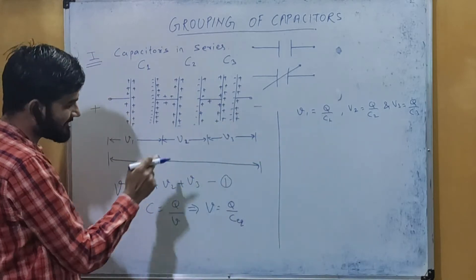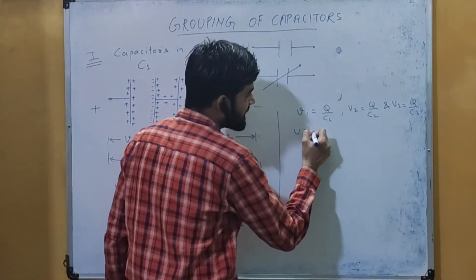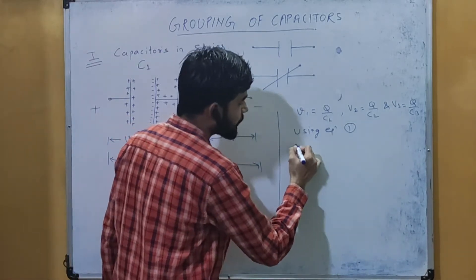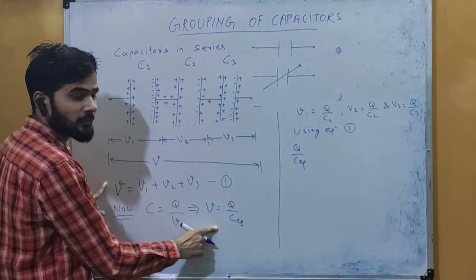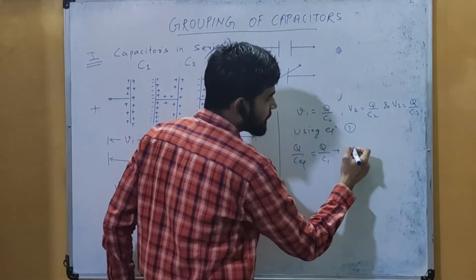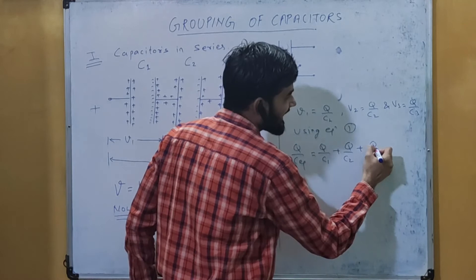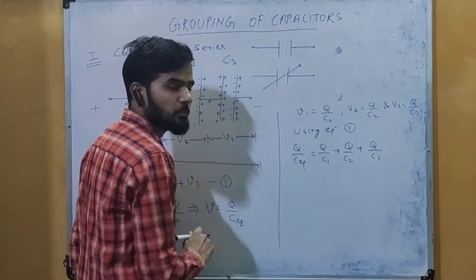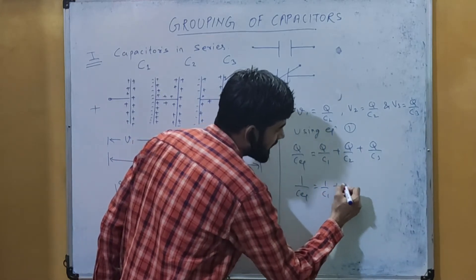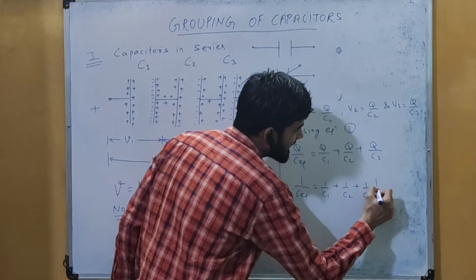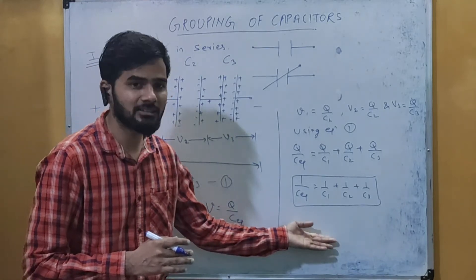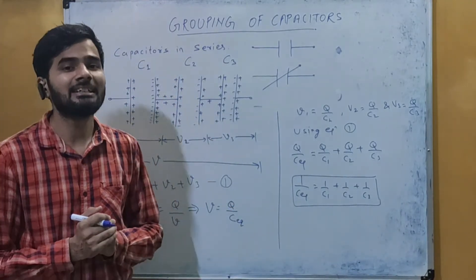Using the equation V = V1 + V2 + V3, substituting: Q/C_equivalent = Q/C1 + Q/C2 + Q/C3. The Q from both sides cancels, giving us: 1/C_equivalent = 1/C1 + 1/C2 + 1/C3. This is the formula to calculate the equivalent capacitance when a number of capacitors are connected in series.